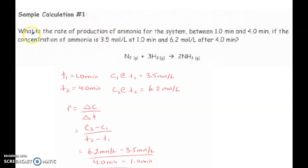So let's take a look here. What is the rate of production of ammonia for the system between one minute and four minutes? So we have our initial time that we are beginning to look at the rate change and our final time. So between one and four minutes. If the concentration of ammonia is 3.5 moles per liter at one minute, so we have the concentration at the first time increment. And we have the concentration at the second time increment. So 6.2 moles per liter at four minutes.